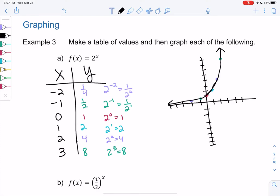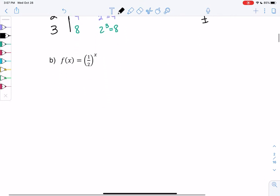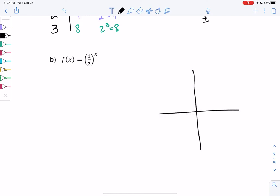It should be smooth, nice and smooth. Let's try one more. So let's do 1 half to the x. So let's see what these fractions do instead. So get a graph set up and then we'll make a table.